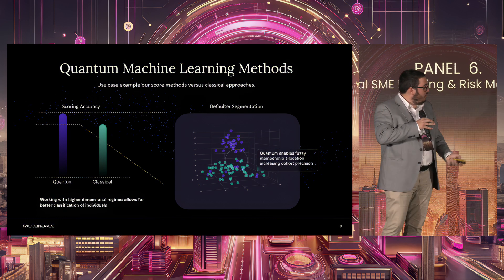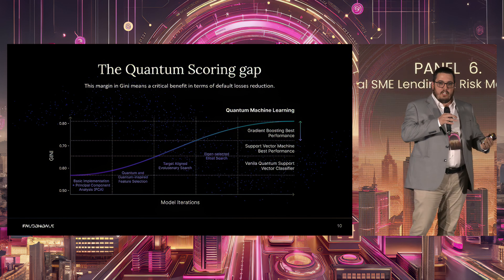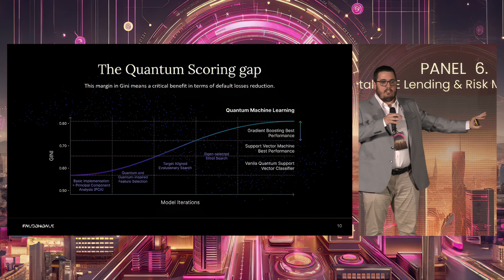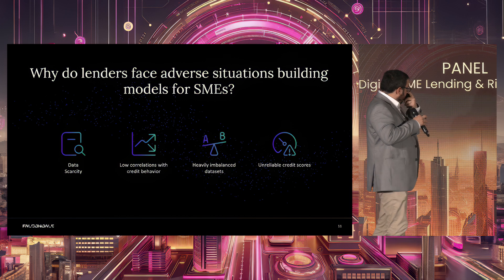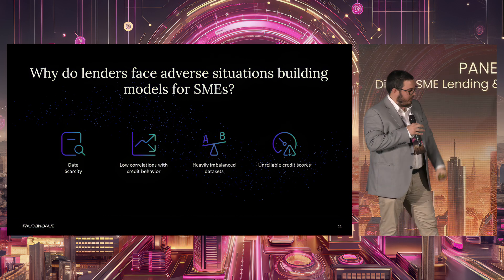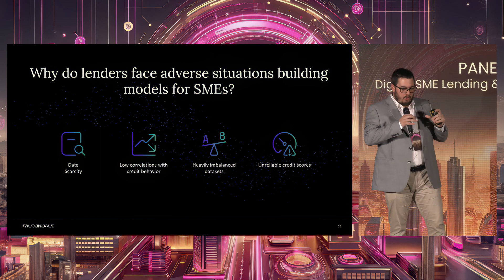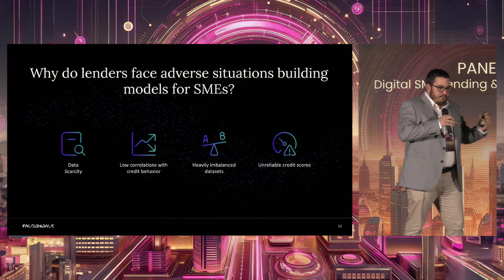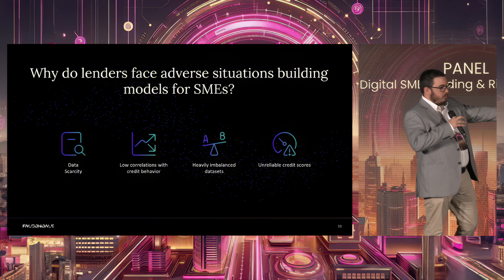By using quantum computing and expressing your data with quantum kernels, you can have a boost in performance even against state-of-the-art machine learning models, with as few as 500 data points. And as I said, adverse situations are what we have in SME lending. Some of these reasons were covered in today's panels: data scarcity — some SMEs are new, and credit bureau data providers are not as prepared as they are for consumer lending. Equifax and Experian know everything about us personally, but for companies that's not actually true.